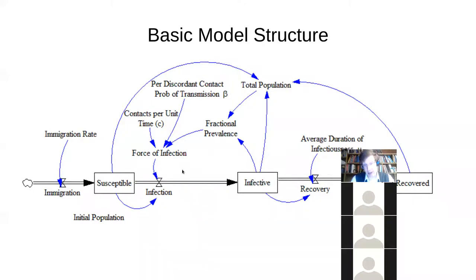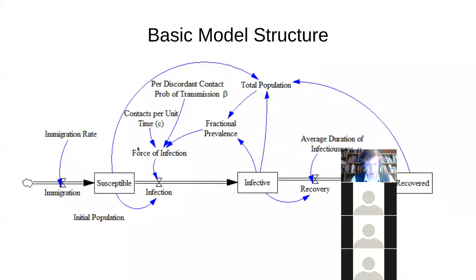But what's different here is this component. This is not a first-order delay. The number of people getting infected per unit time is dependent on susceptibles — if there's no susceptibles, nobody's going to get infected. But it depends on more than that. Ultimately, it depends on infectives, right? It takes two to tango. You need an infective in order to infect a susceptible. Hence this component. But you'll see that it's rather more involved than that.